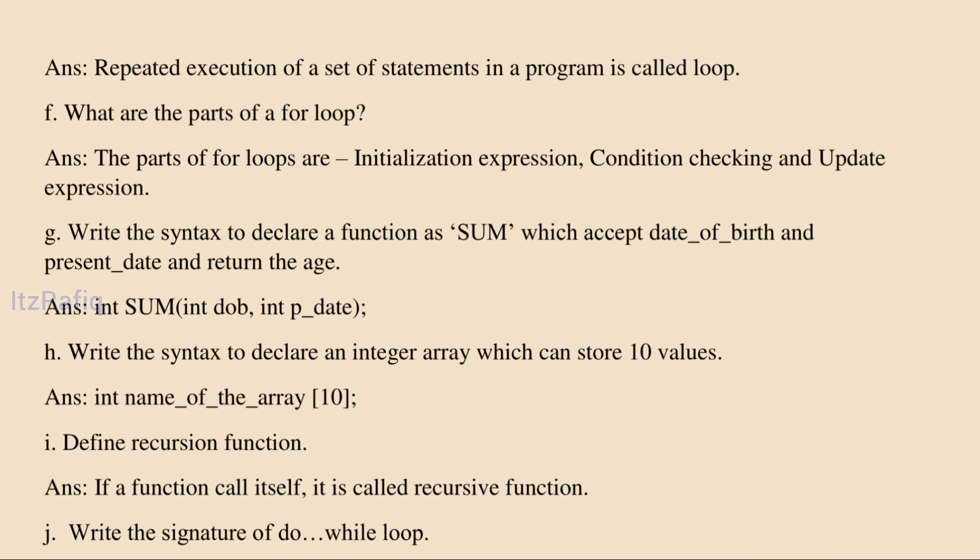Write the syntax to declare a function that accepts date of birth and present date and returns the age. The age will definitely be an integer type, so we write int, then the function name, then within brackets two integer parameters: int dob and int present_date, followed by a semicolon.